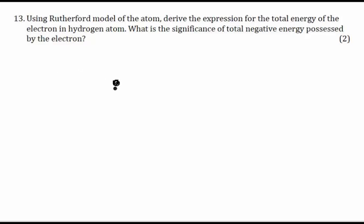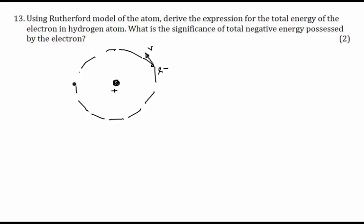We say this is the nucleus which has positive charge, and the electron is performing circular motion about it, moving with a velocity V in a circular orbit. Because it is doing circular motion it has some kinetic energy, and because of the electrostatic potential energy between the nucleus and the electron, there is electrostatic potential energy also. So let's try to compute both of them.